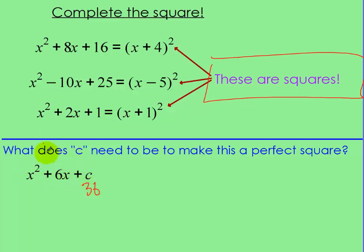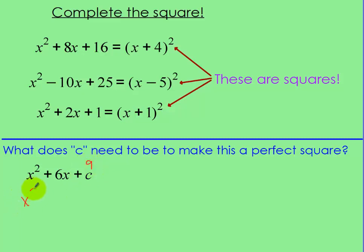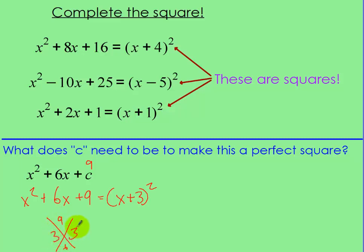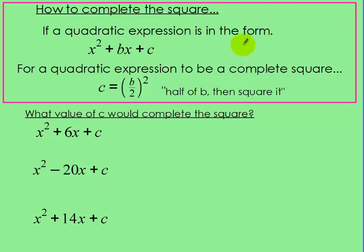Well, c is going to be 9, because x squared plus 6x plus 9 equals x plus 3 squared when factored. The two numbers that multiply to 9 and add to 6 are 3 and 3. So, write this down clearly: if you have a quadratic expression in the form x squared plus bx plus c, for it to be a perfect square your c value is b divided by 2, squared — in other words, half of b, then square it. You take the coefficient of the x term, divide it by 2, square it, and that tells you what you need to complete the square.